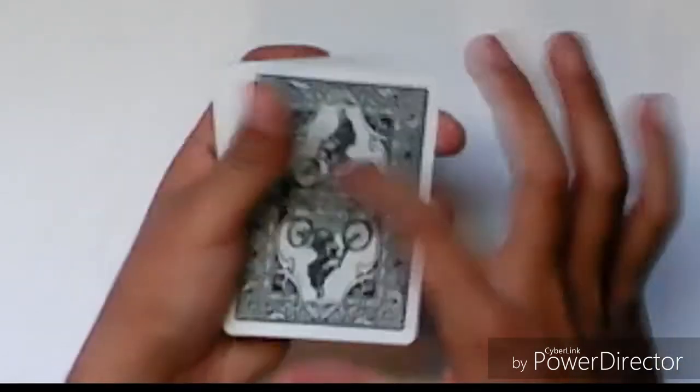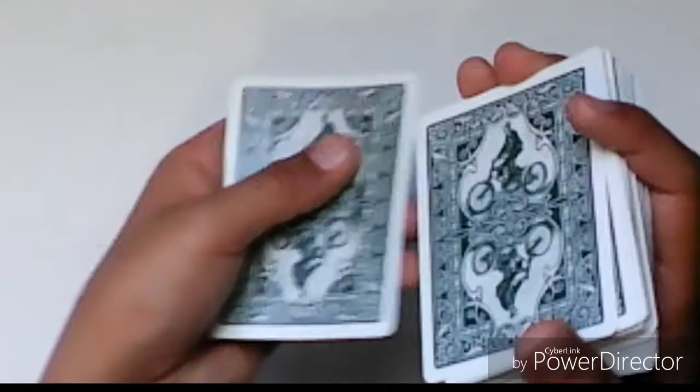So after you're at this point, you're going to want to deal one card, which is the jack, and deal the other one, and grab those two and place it on the top. Grab the two cards that you dealt and place it on the top.